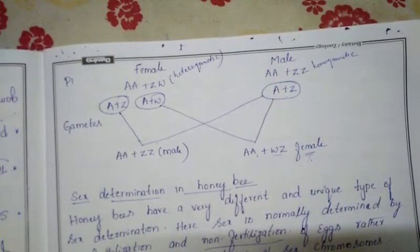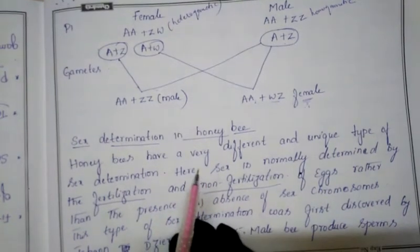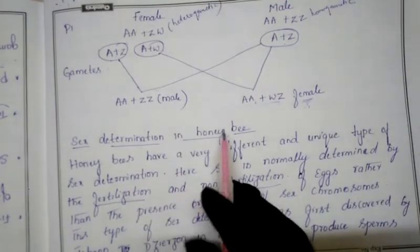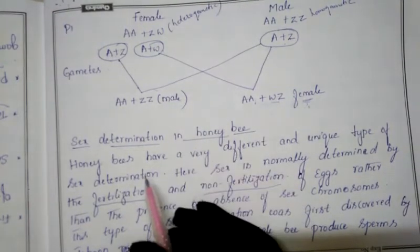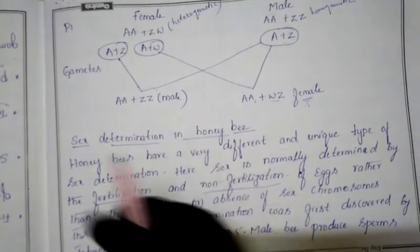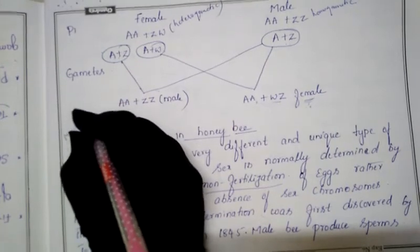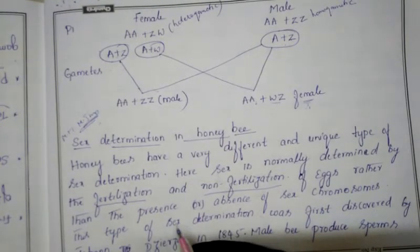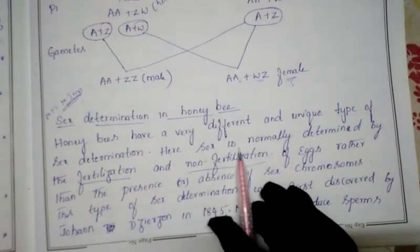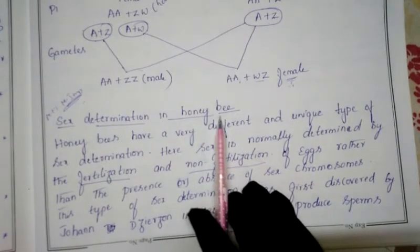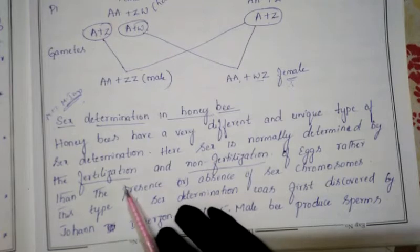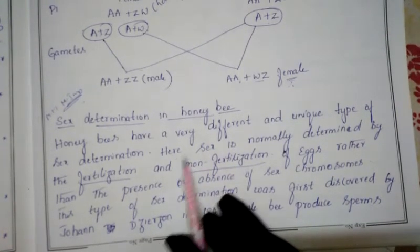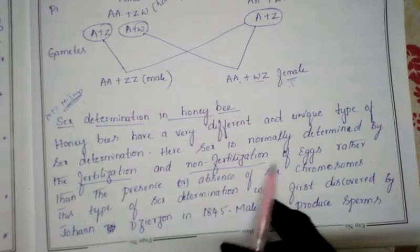In nature, honeybees have a completely different and unique sex determination system, unlike the three types discussed. In honeybees, sex is determined by the fertilization and non-fertilization of the egg, not by the presence or absence of sex chromosomes.